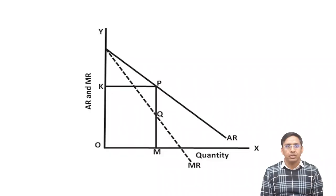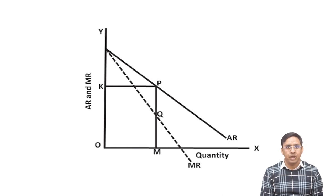As we can see in the diagram, the marginal revenue is below the average revenue. Here we can say that the price prevailing in the market and the marginal revenue is lying below the average revenue.